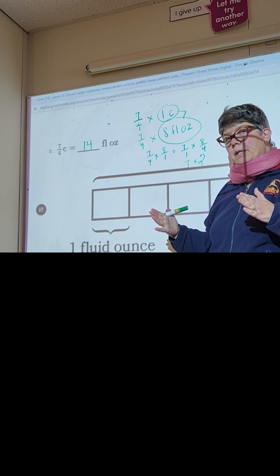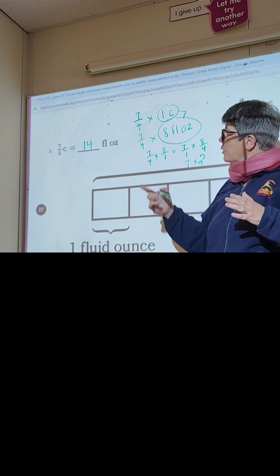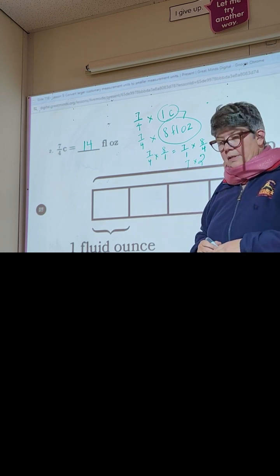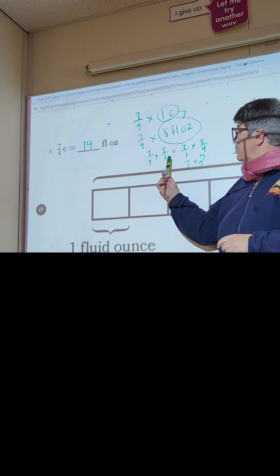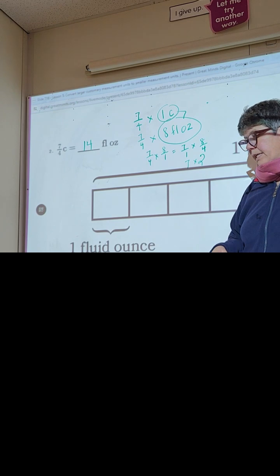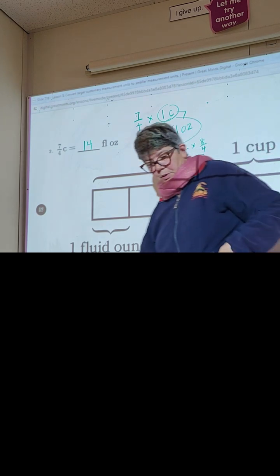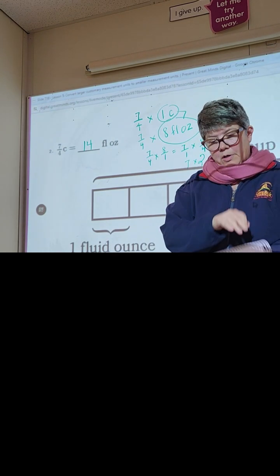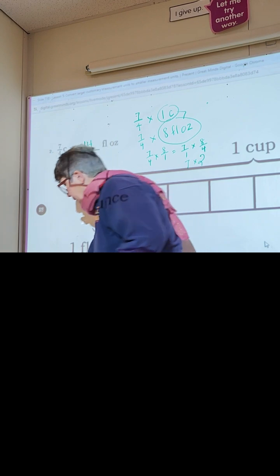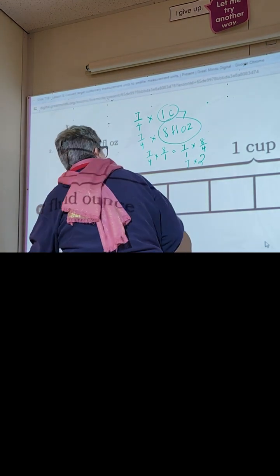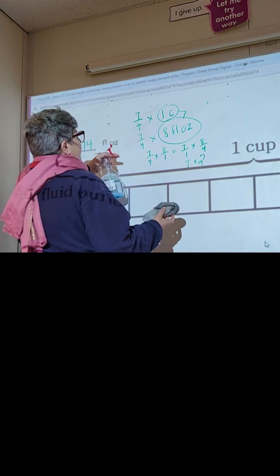That gives us 14 fluid ounces. So seven-fourths of a cup is 14 fluid ounces. There are eight fluid ounces in one cup, so it makes sense the answer is going to be more than eight. Make sure you have this written down because we're going to move on to number three.